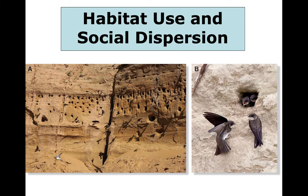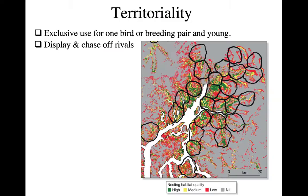To demonstrate how that can vary even within closely related species: on the left we have bank swallows, which are colonial. They don't defend any territory except their nest cavity itself, and they oftentimes forage together and potentially share information on the location of foraging resources. In contrast, something like a northern rough-winged swallow on the right is going to be solitary and not closely spaced. That latter category is what we see in most birds.